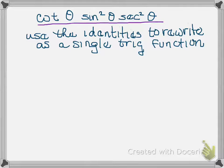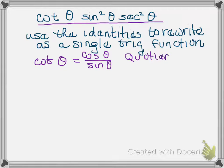For example, you know that the cotangent of theta is equal to the cosine of theta over the sine of theta. That's what's known as a quotient identity. Another identity that you know is that one over the cosine of theta is equal to secant of theta and that is a reciprocal identity.